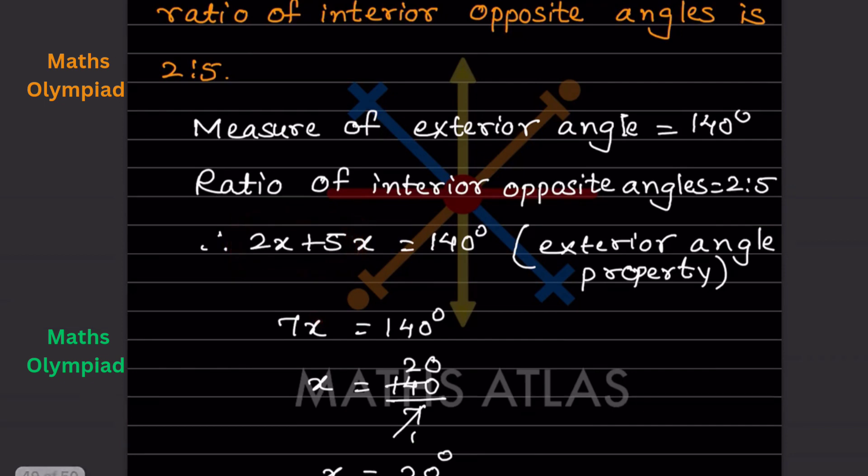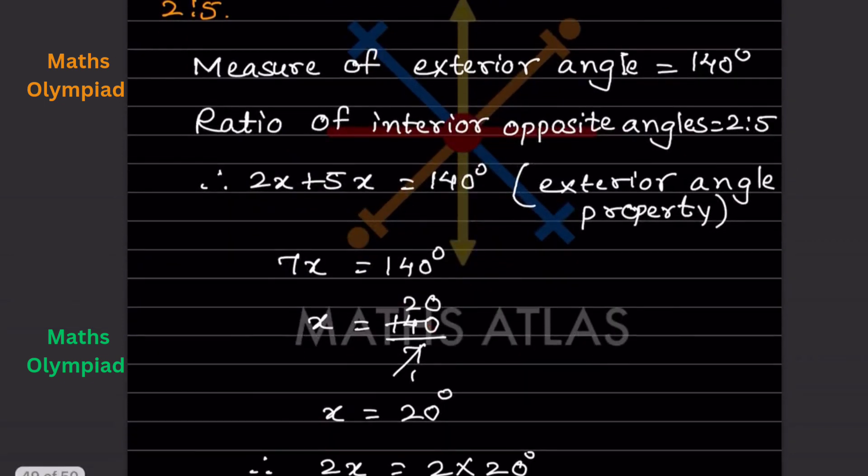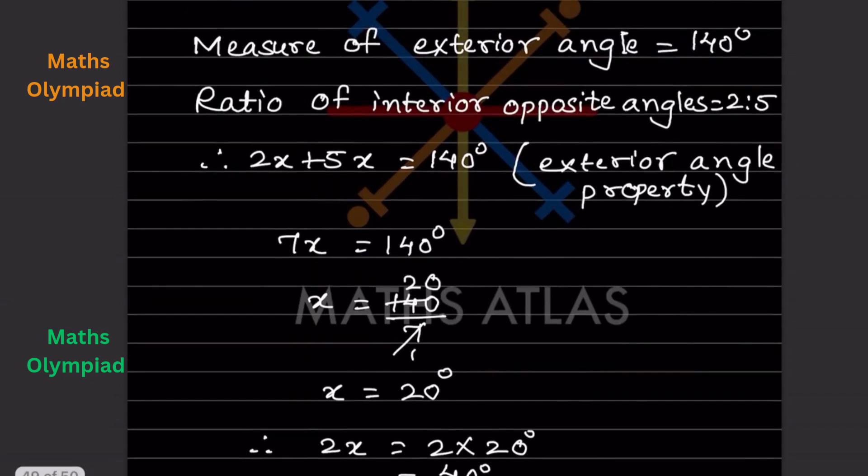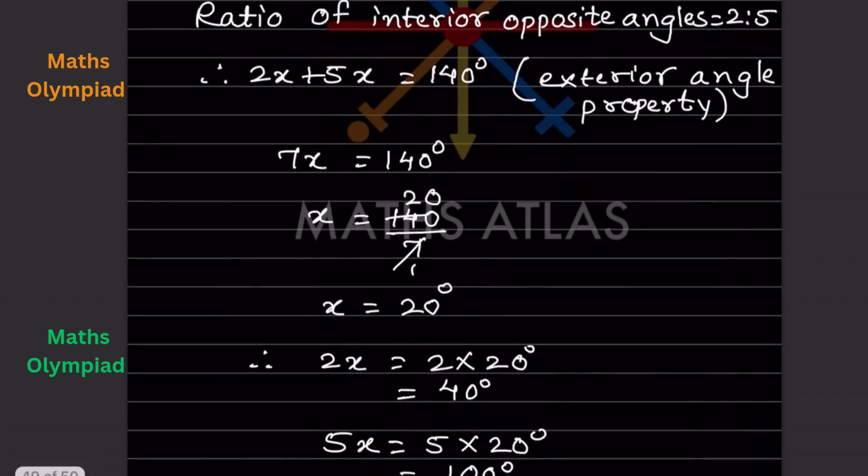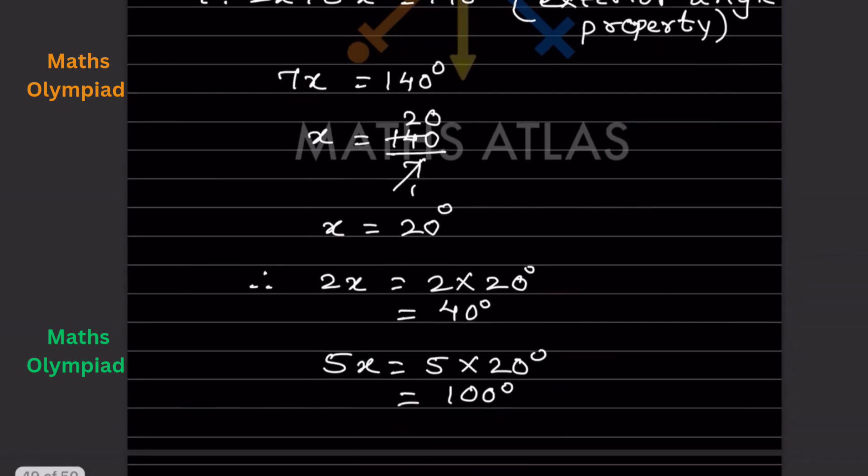Therefore, x equals 140 divided by 7, which is 20. Now with x equals 20, we can find 2x equals 2 times 20, which is 40°. And 5x equals 5 times 20, which is 100°.